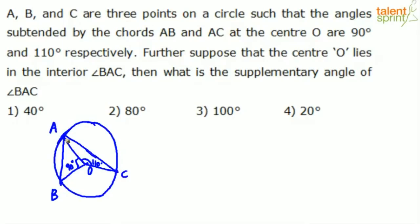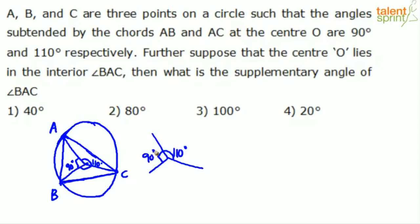One simple way to answer this: if you construct chord BC by joining points B and C, then the angles at center O must sum to 360 degrees. We already know one angle is 90 degrees and another is 110 degrees, so this angle is 110 degrees and this one is 90 degrees.